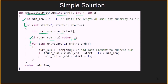Otherwise, in the second loop, we keep adding the elements at index end to the current sum, and then check if the current sum is greater than x and the current length of the subarray is less than minimum length. If yes, we update the minimum length as the length of the current subarray. Finally, we return the value minimum length as a result. Since we are using two nested loops, the time complexity of this method is O(n²).